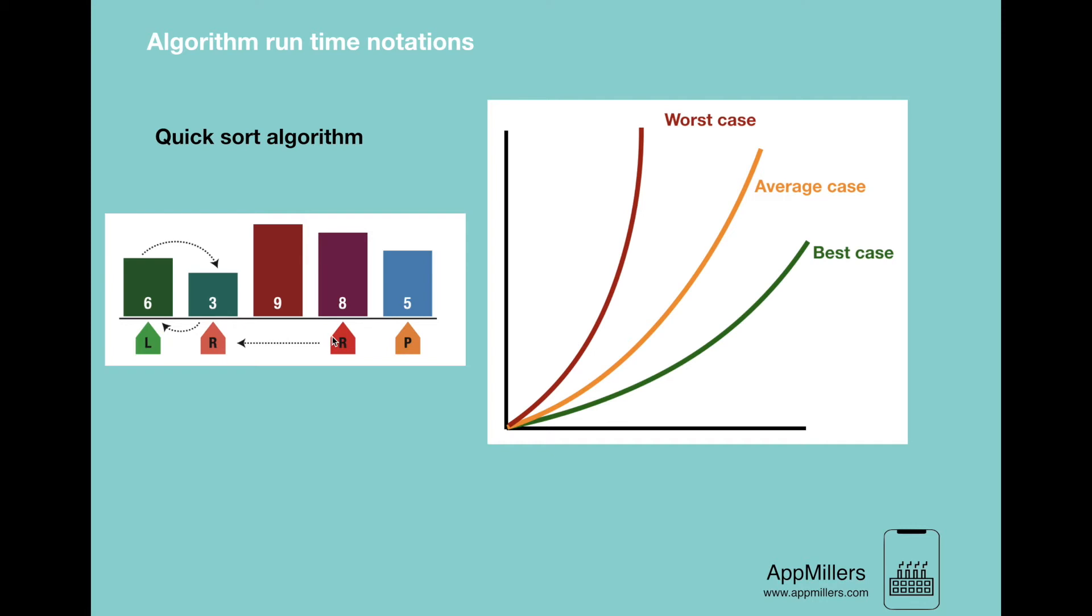Then the right marker starts to move to the left. And this time, when it reaches a number that is less than the pivot, in our case it stops at 3, which is less than 5. When both left and right markers have stopped, the markers' numbers are swapped. In our case, 6 swapped with 3. The operation repeats like this until all elements get sorted.